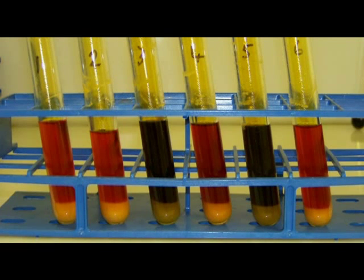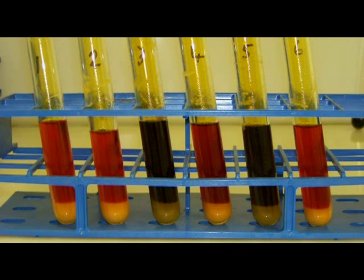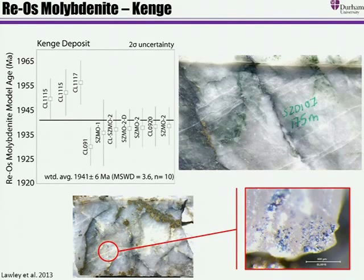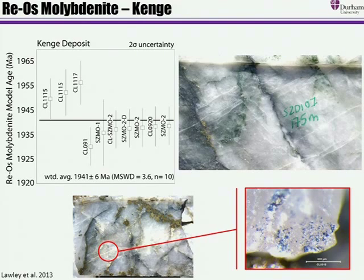We take those samples, put them in glass tubes called Carius tubes, dissolve them in reverse aqua regia, and bake them in an oven for 48 hours at 220 degrees under pressure. Then we go through a series of wet chemical steps to separate out rhenium from osmium. Here are some rhenium-osmium molybdenite model ages for the largest mine in the area. Molybdenite is great because it has lots of rhenium — you don't need much sample — and it has almost no common osmium when it crystallizes, so you can calculate model ages with good confidence.